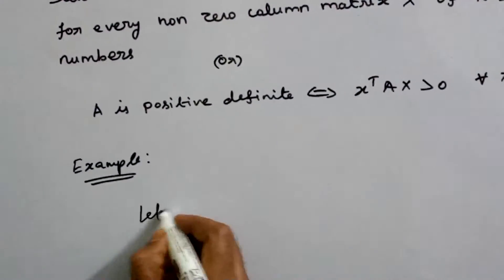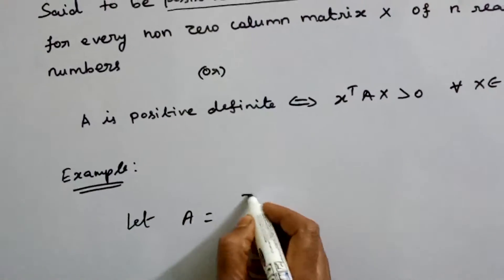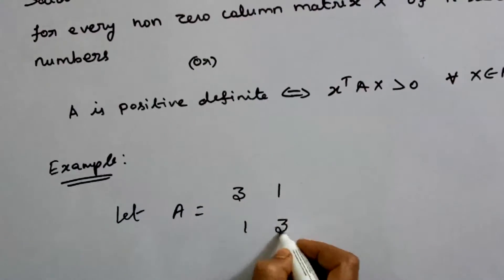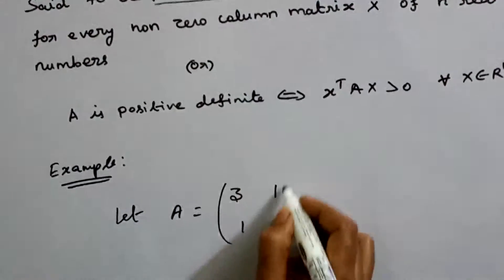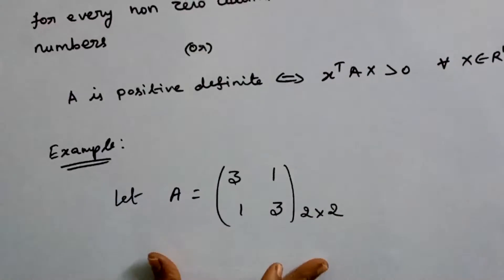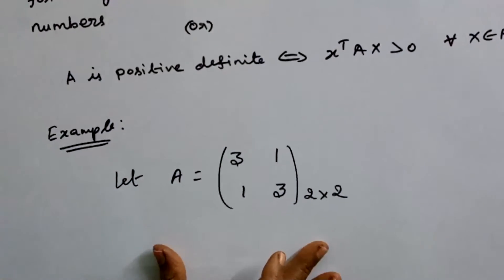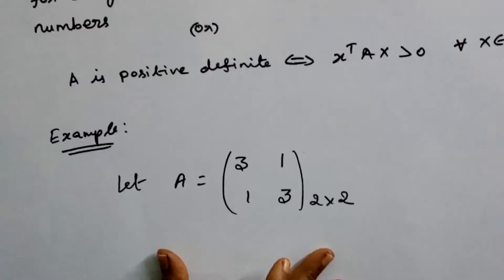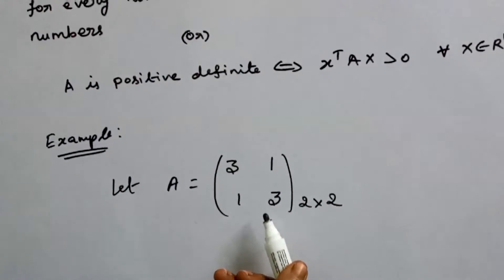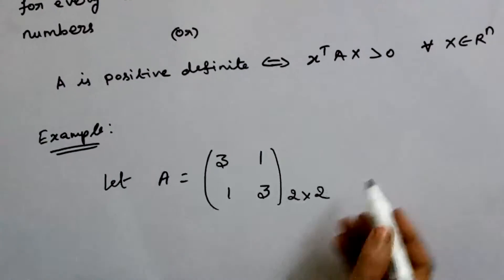Let A be equal to [3, 1; 1, 3]. This is a 2 by 2 matrix. This is a positive definite matrix, and it is a symmetric matrix.